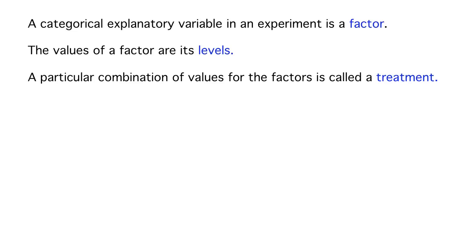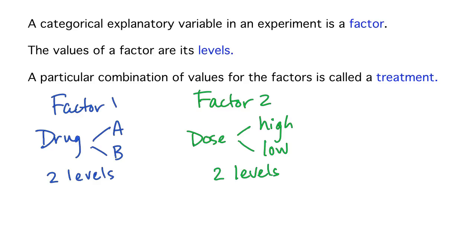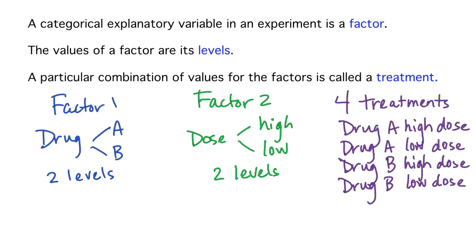It's also possible that an investigator might want to simultaneously manipulate two explanatory variables. For example, imagine a study comparing two drugs — drug A and B — each at two different doses, high and low. Then we have two factors, each with two levels, but four different combinations: drug A at high dose, drug A at low dose, drug B at high dose, and drug B at low dose. So in this case, there are four treatments.